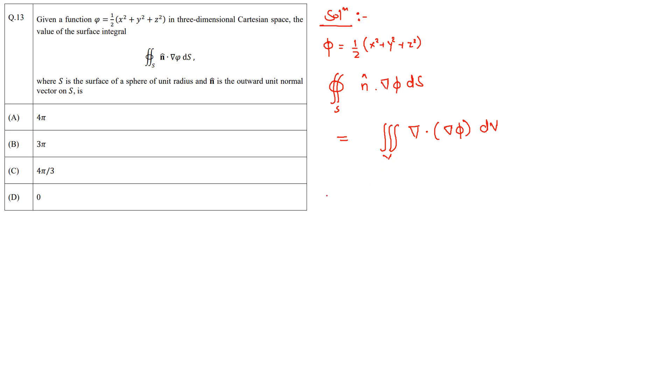Now first we need to calculate the gradient of φ, which will be equal to ∂φ/∂x î plus ∂φ/∂y ĵ plus ∂φ/∂z k̂. Now φ is given to us, so ∂φ/∂x will be equal to x î. Similarly this will be y ĵ, and ∂φ/∂z will be z k̂.